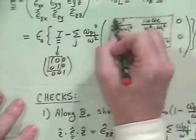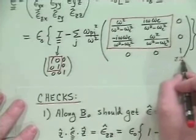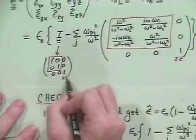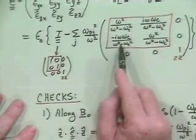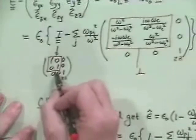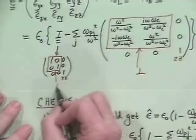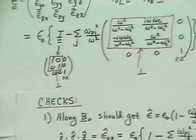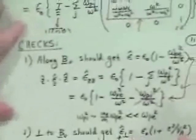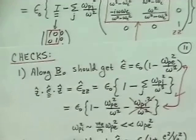What do I mean by the perpendicular dielectric constant? Coming back to our dielectric tensor, the xx and yy components form the 2x2 perpendicular block — the xx, xy, yx, yy components — and we'll call all of this perpendicular. So that's the part I want to take a look at now, to see what happens in the limit that omega goes to 0.